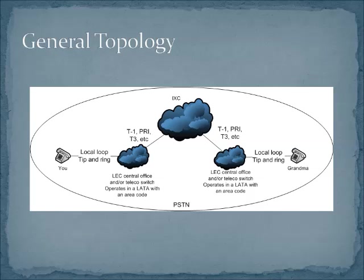To start us off, we're going to work with this general topology. This entire diagram is sort of representative of the PSTN, or the Public Switched Telephone Network. It is comprised of local exchange carriers and inter-exchange carriers, and the phones themselves are connected to what we call the local loop. I'll talk about the local loop later in future videos, but I just wanted to give you the architecture we're going to be using here.